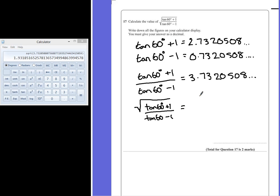It says to write down all the figures on your calculator display as a decimal so that's going to be 1.9318516525781. Most calculators will only go up to about 9 decimal places. You just write down exactly what you see on the calculator screen and that will be your answer.